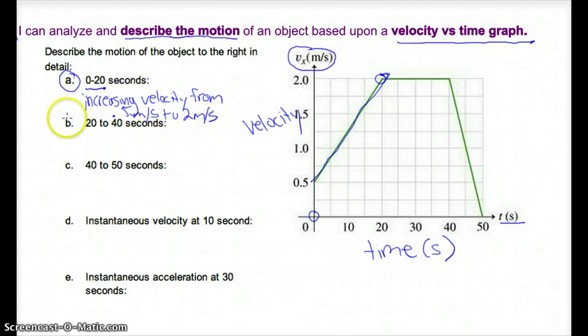Now let's take a look at 20 to 40 seconds. At first when you look at this you might think it's just standing still, but remember this is a velocity versus time graph, not a distance versus time graph. So between 20 and 40 seconds, we're actually moving at 2 meters per second at a constant speed. We're moving at a constant velocity of 2 meters per second between 20 and 30 seconds.